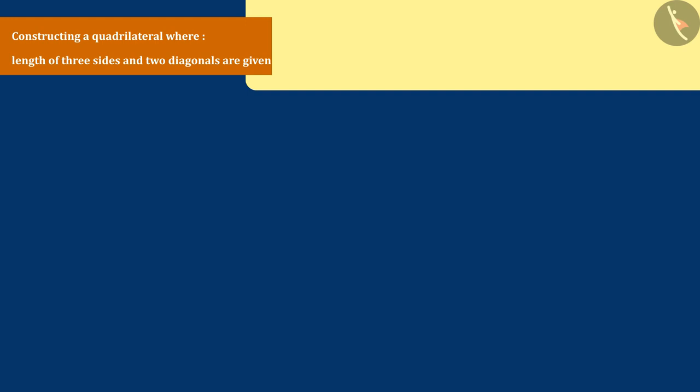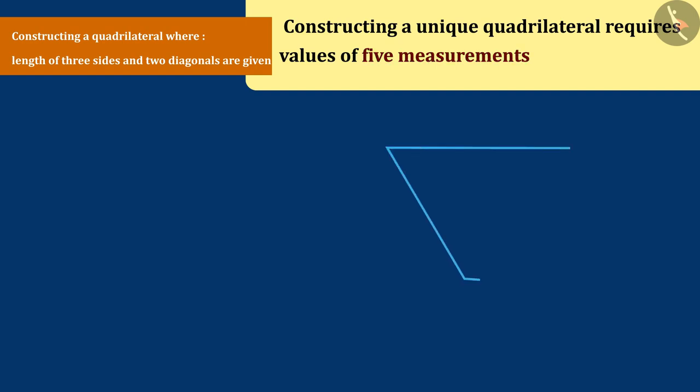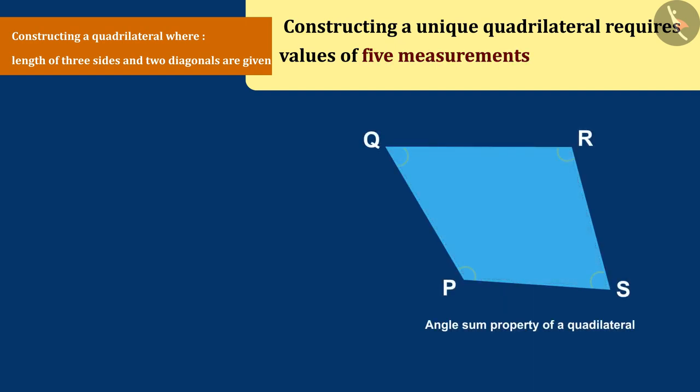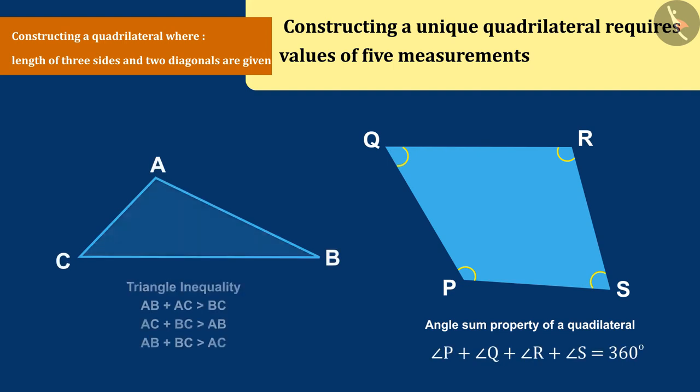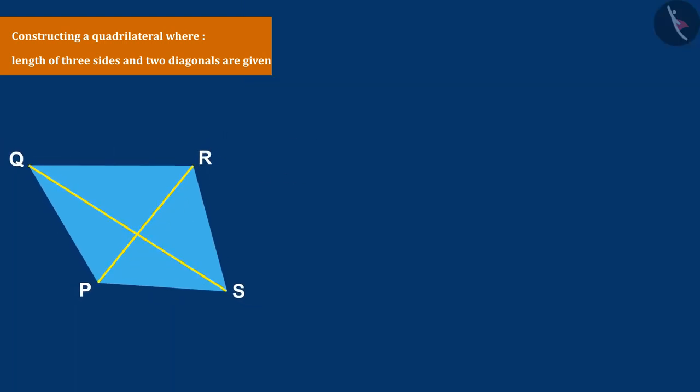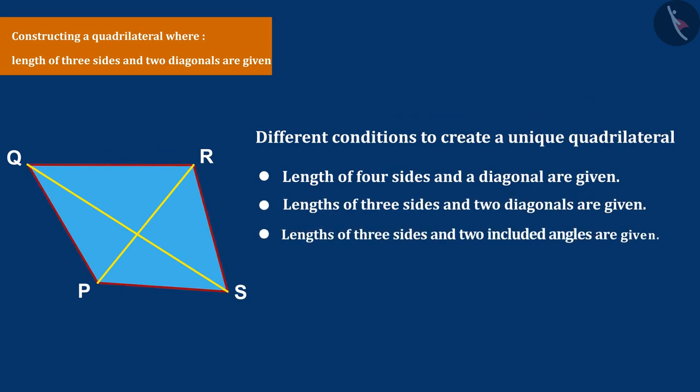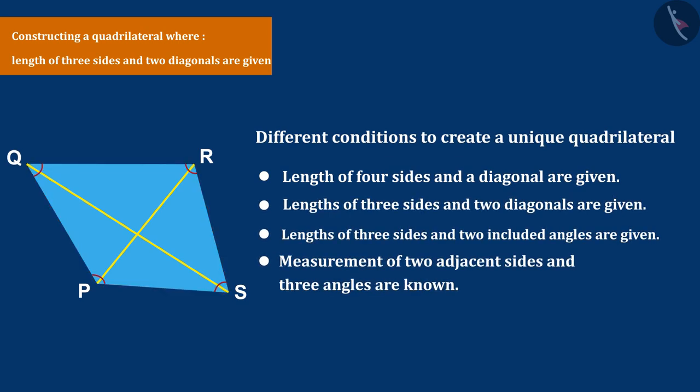You know from the previous video that constructing a unique quadrilateral requires values of five measurements that satisfy the angle sum property as well as the triangle inequality. These five measurements are made by combining arms, angles and diagonals.